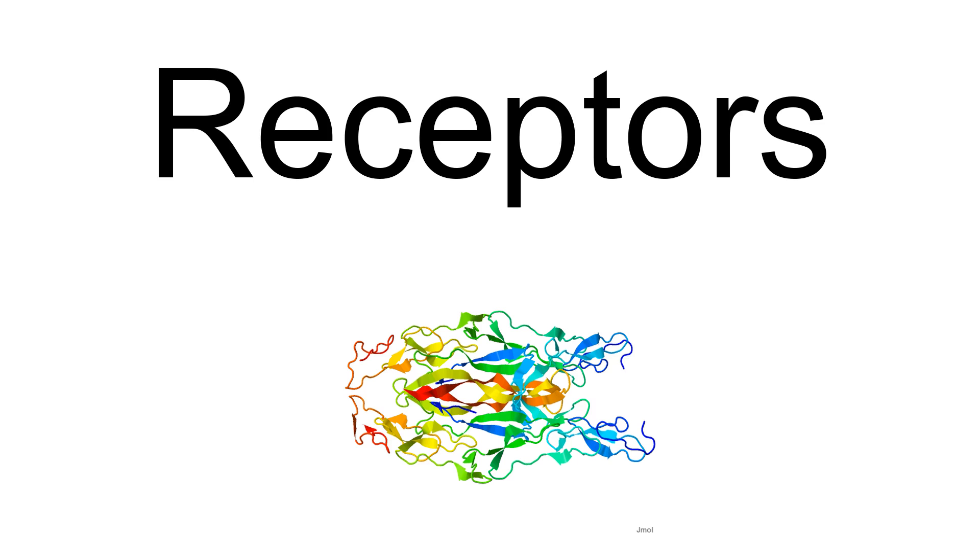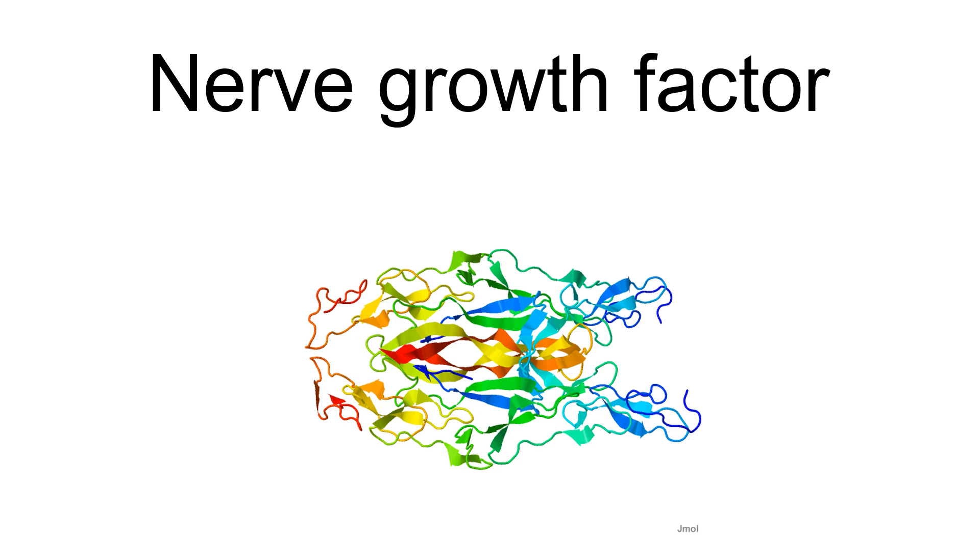Nerve growth factor (NGF), the prototypical growth factor, is a protein secreted by a neuron's target cell. NGF is critical for the survival and maintenance of sympathetic and sensory neurons. NGF is released from the target cells, binds to and activates its high-affinity receptor TRK-A on the neuron, and is internalized into the responsive neuron. The NGF-TRK-A complex is subsequently trafficked back to the neuron cell body. This movement of NGF from axon tip to soma is thought to be involved in the long-distance signaling of neurons.